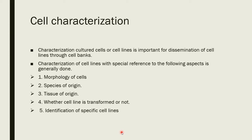Cell characterization is very important; we can disseminate information about a particular cell line from cell banks. Characterization of a cell line is generally done with special reference to the following aspects: morphology of the cell, species of origin, tissue of origin, whether the cell line is transformed or not, and identification of the specific cell lines.